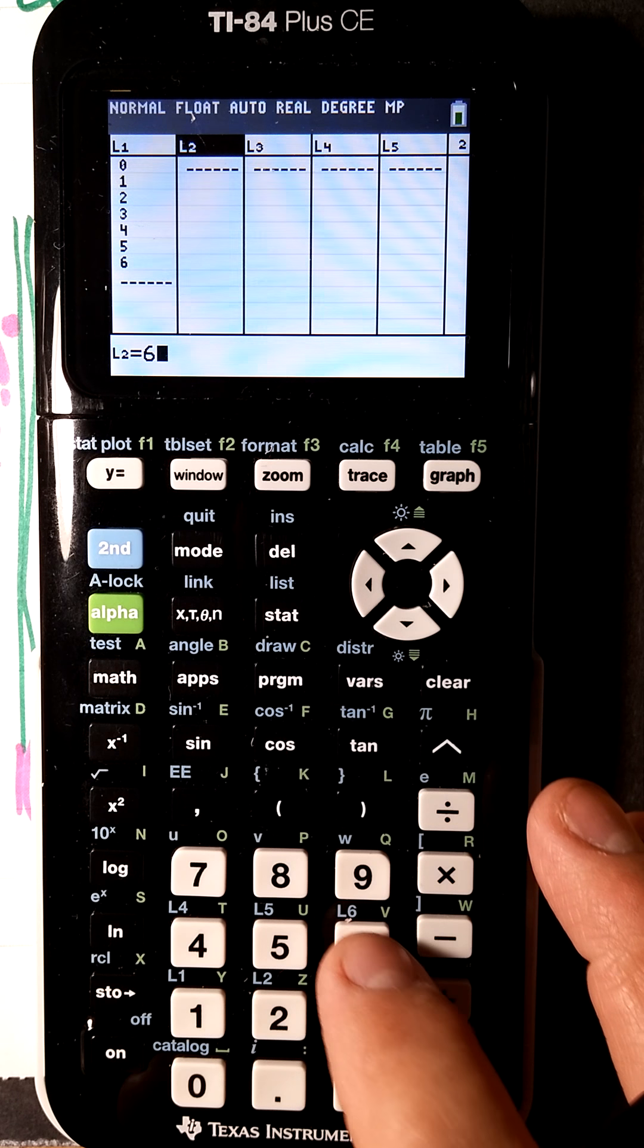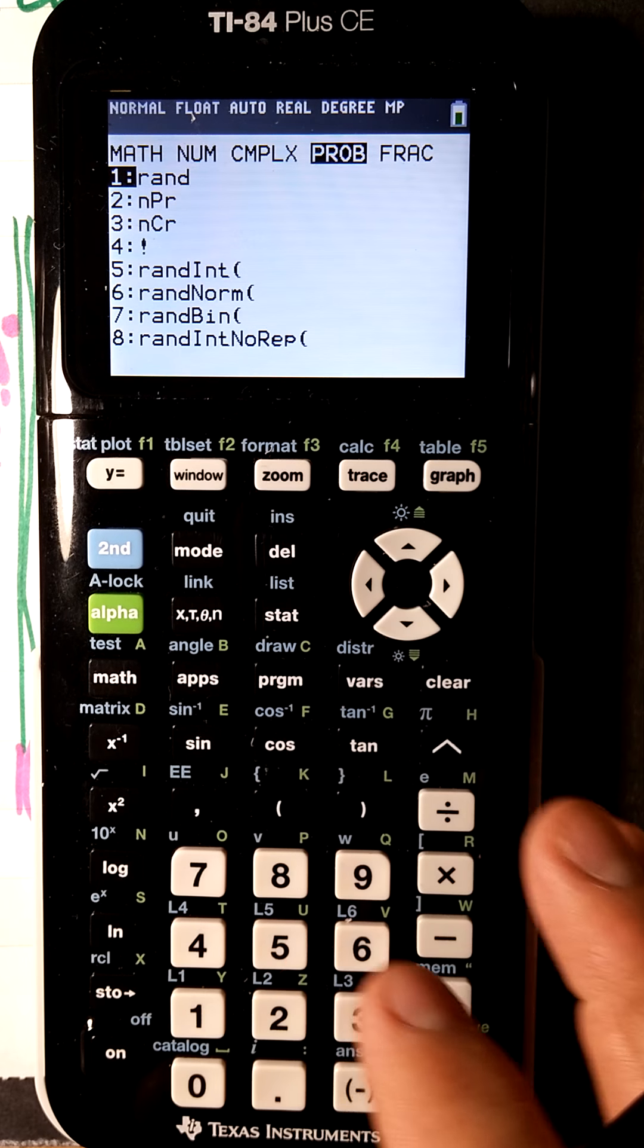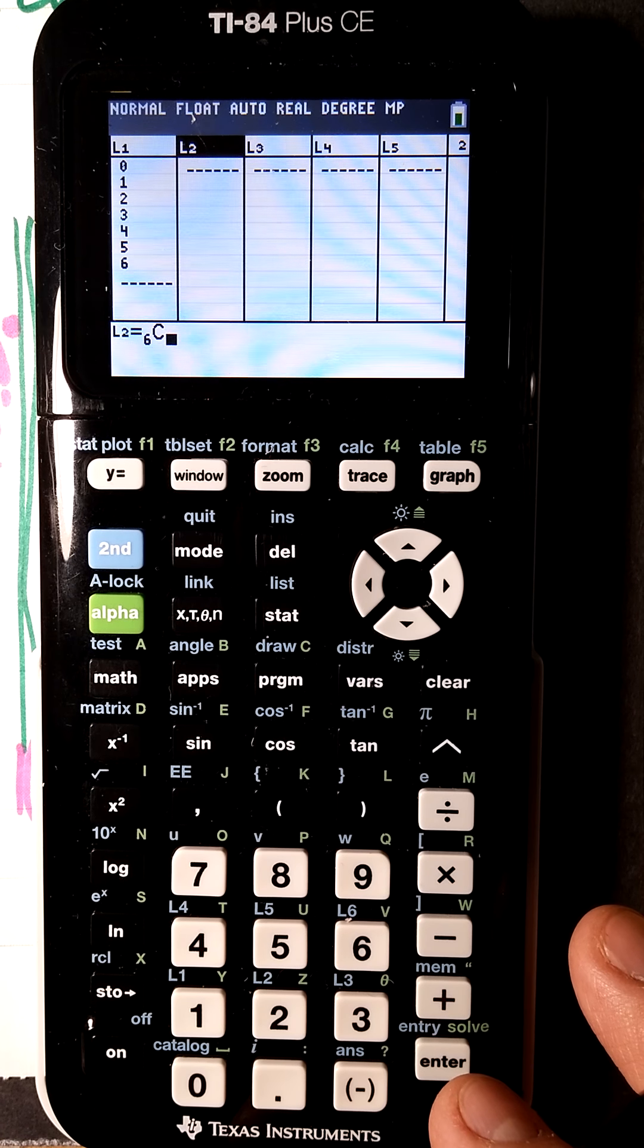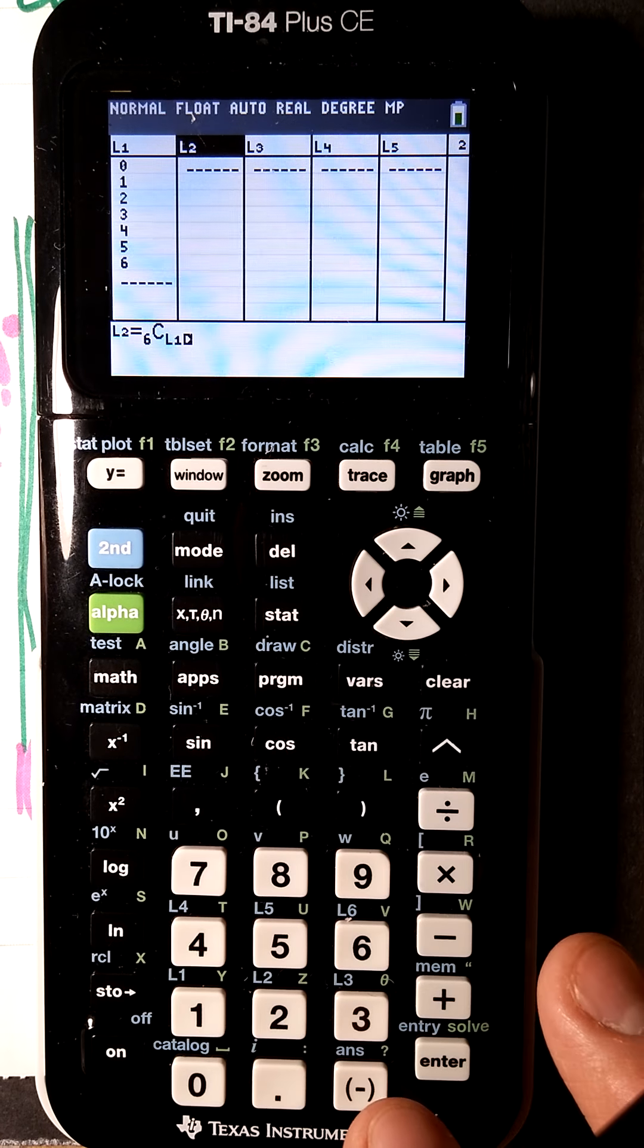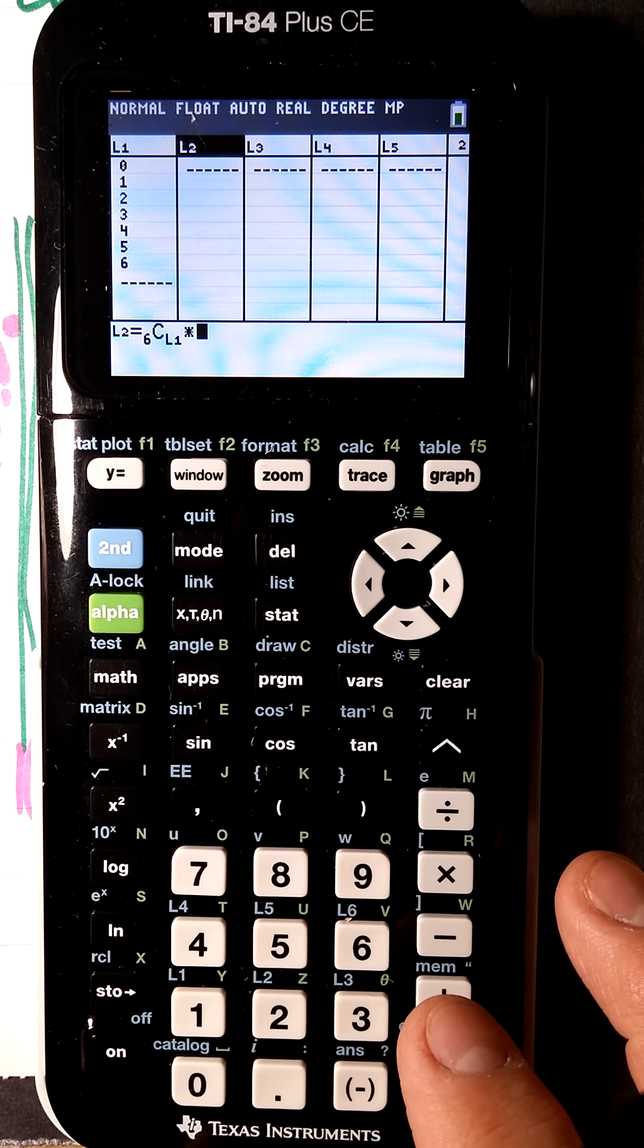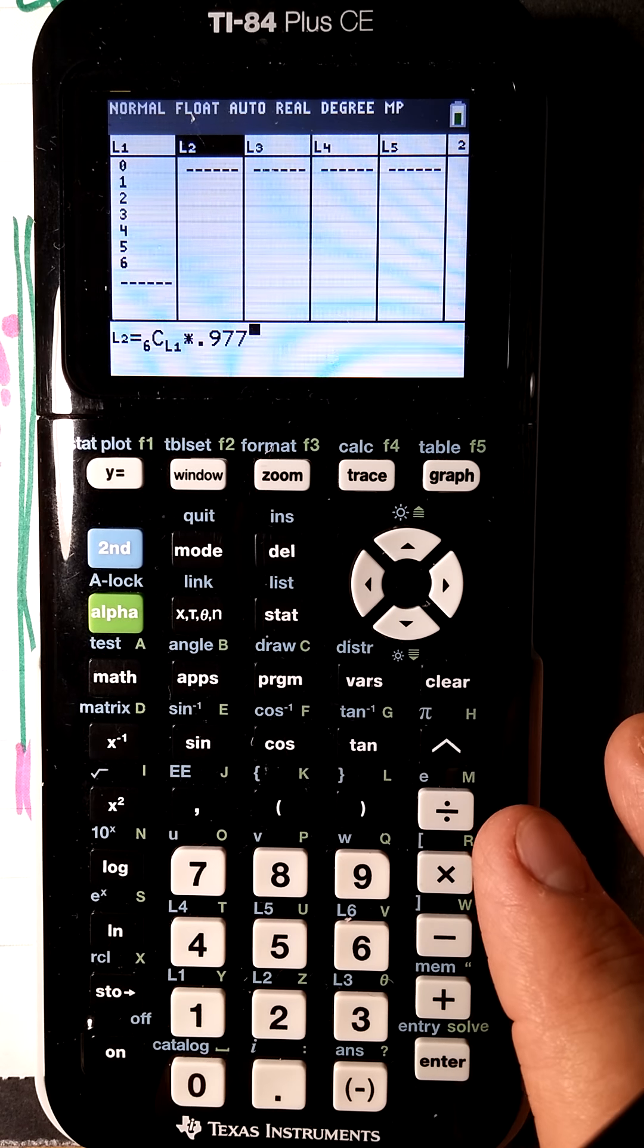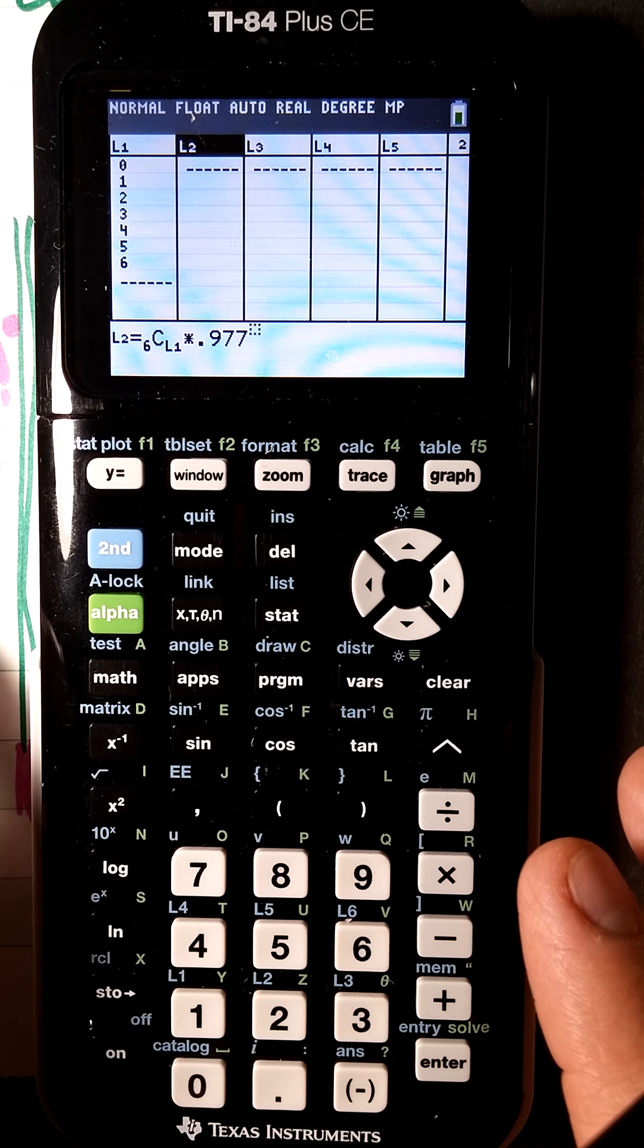The r part is going to be list 1 because it goes 0, 1, 2, 3. We're going to do second 1 to get the L1 in there, right arrow, then you're going to multiply by the 0.977 and then put it to the power.